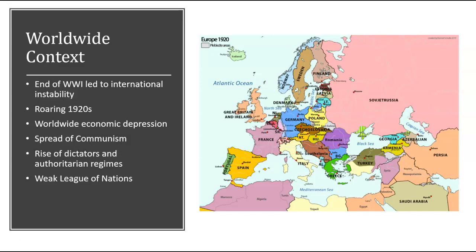Germany, because of the worldwide economic depression and the collapse of the international financial system, which led to massive unemployment and poverty worldwide — it actually starts in the 1920s for Germany — gets to about 75% unemployment. So if you think about a group of four friends, three of you are unemployed and looking for work and one is employed, and probably underemployed. Germany is still trying to pay reparations throughout the 1920s. The U.S. is pretty isolated during this time period, so we're not hugely involved in the rest of the world.